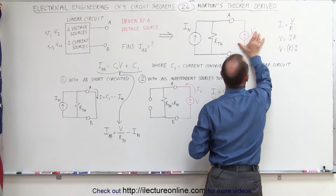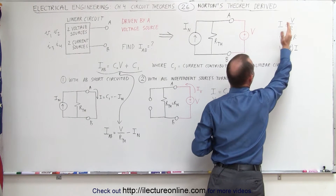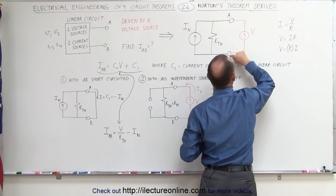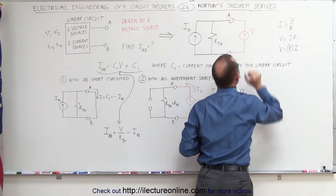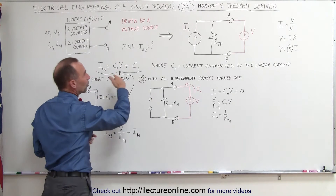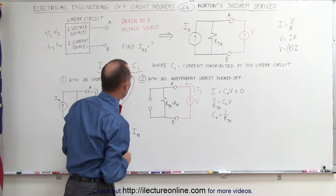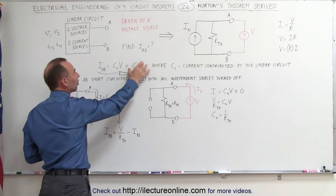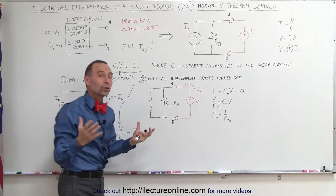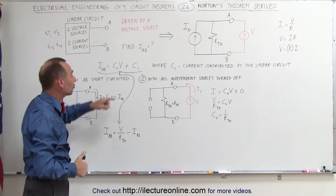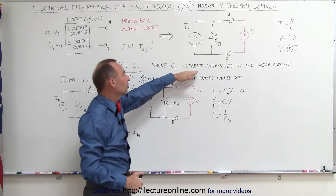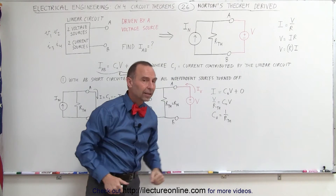If we multiply the voltage driver by some constant, we should be able to get the current that goes from A to B relative to this voltage source. Therefore, that constant is proportional to 1 over the resistance of the circuit. Plus, we'll have some current that comes from the equivalent circuit — we don't know what the current is, so let's call that current C1. C1 represents the current contributed by the linear circuit.